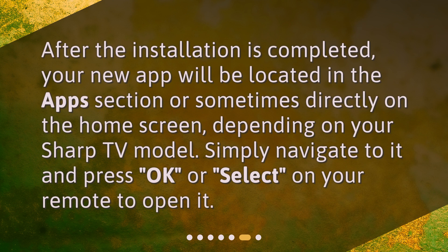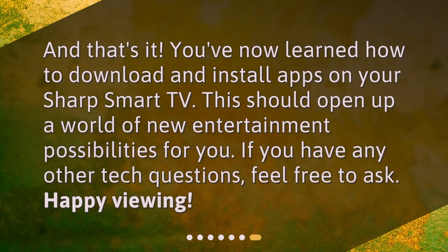After the installation is completed, your new app will be located in the Apps section or sometimes directly on the Home screen, depending on your Sharp TV model. Simply navigate to it and press OK or Select on your remote to open it. And that's it! You've now learned how to download and install apps on your Sharp Smart TV. This should open up a world of new entertainment possibilities for you. If you have any other tech questions, feel free to ask. Happy viewing!